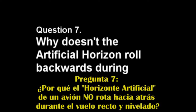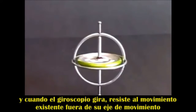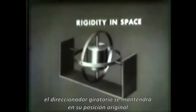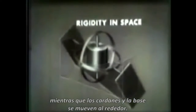Question 7. Why doesn't the artificial horizon on a plane roll backwards during straight and level flight? The artificial horizon is based on a gyroscope, and when a gyroscope spins, it resists movement away from the axis of spin. As for rigidity in space, the spinning rotor remains in its original attitude while the gimbals and base move around it. In other words, the gyro maintains its axis in relation to space, and not to the surface of the Earth.